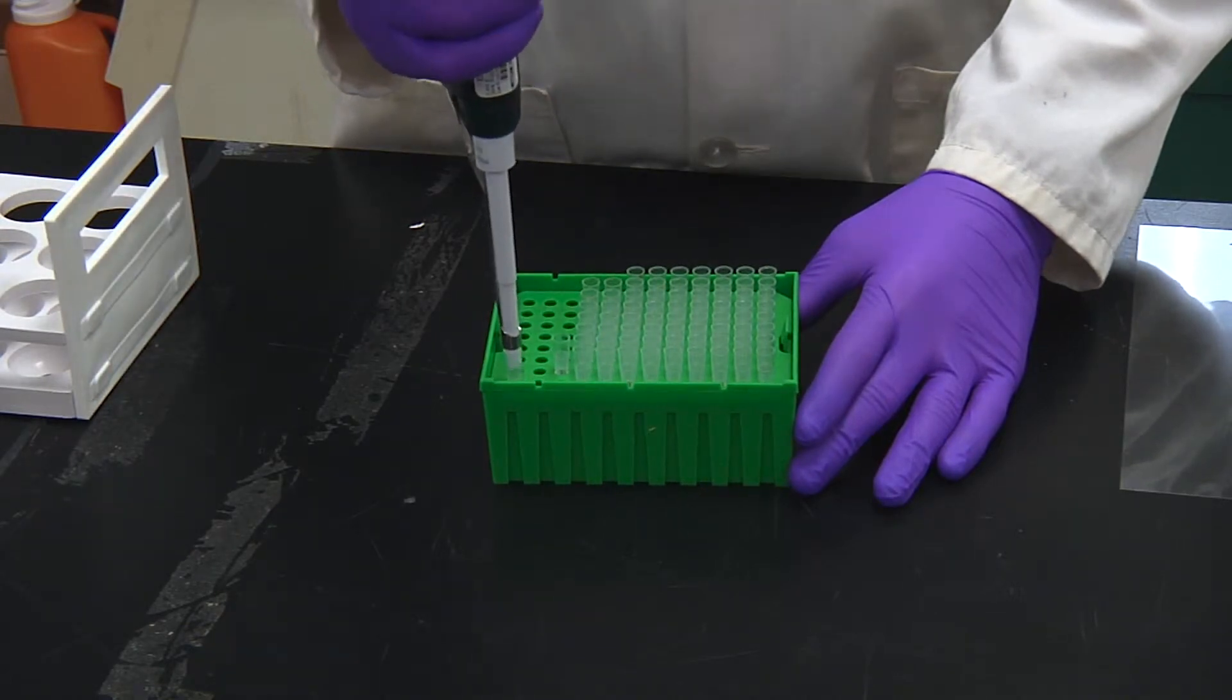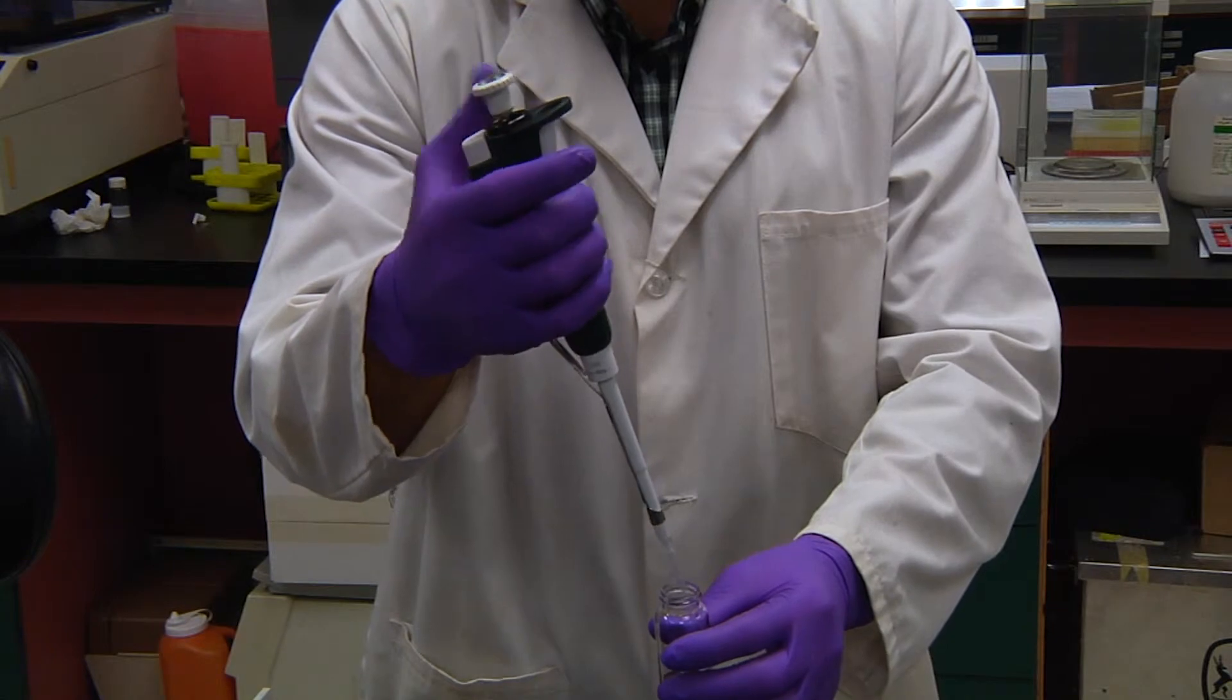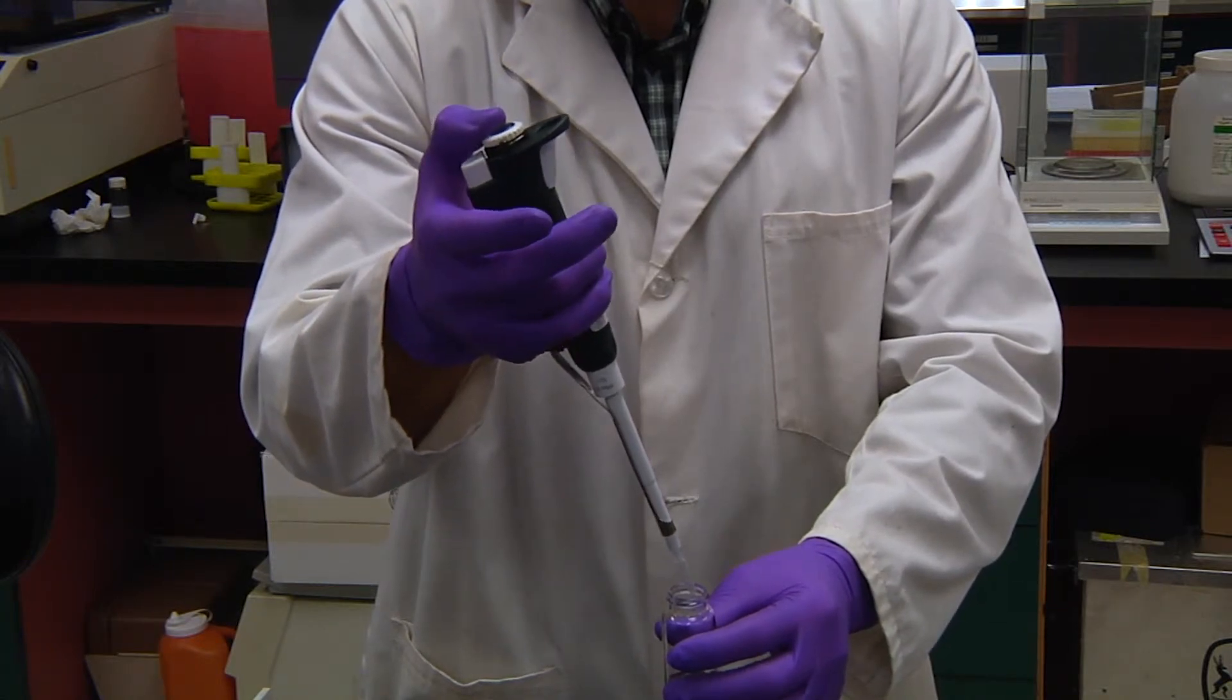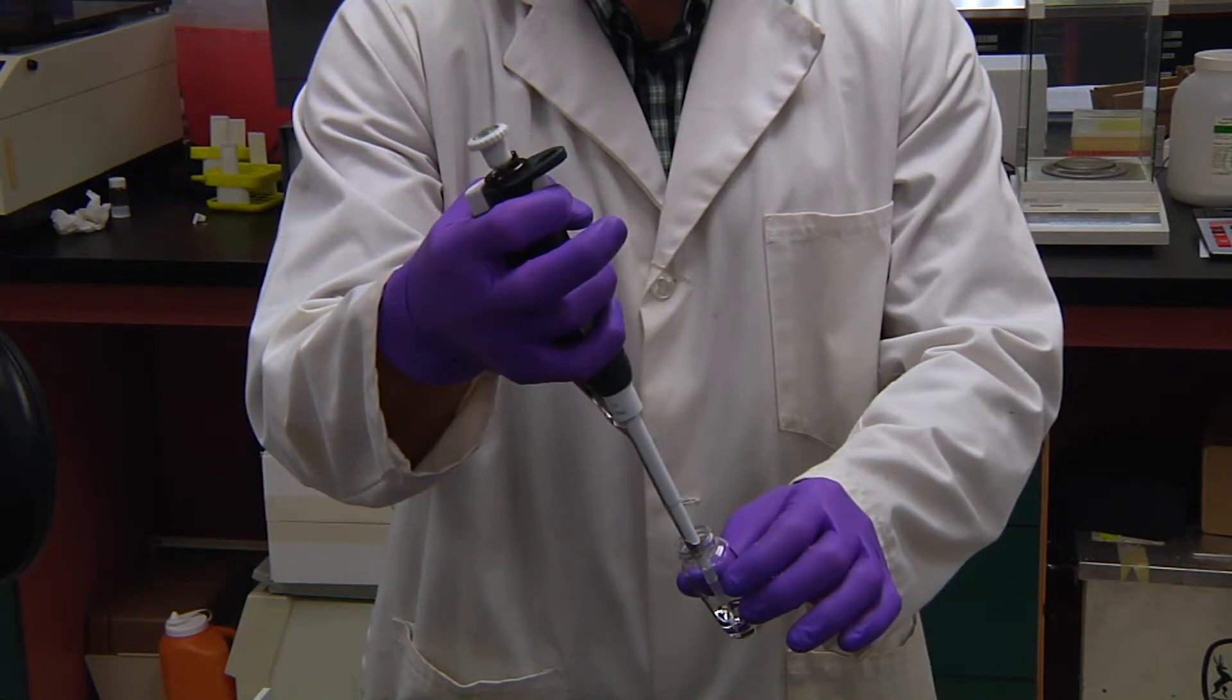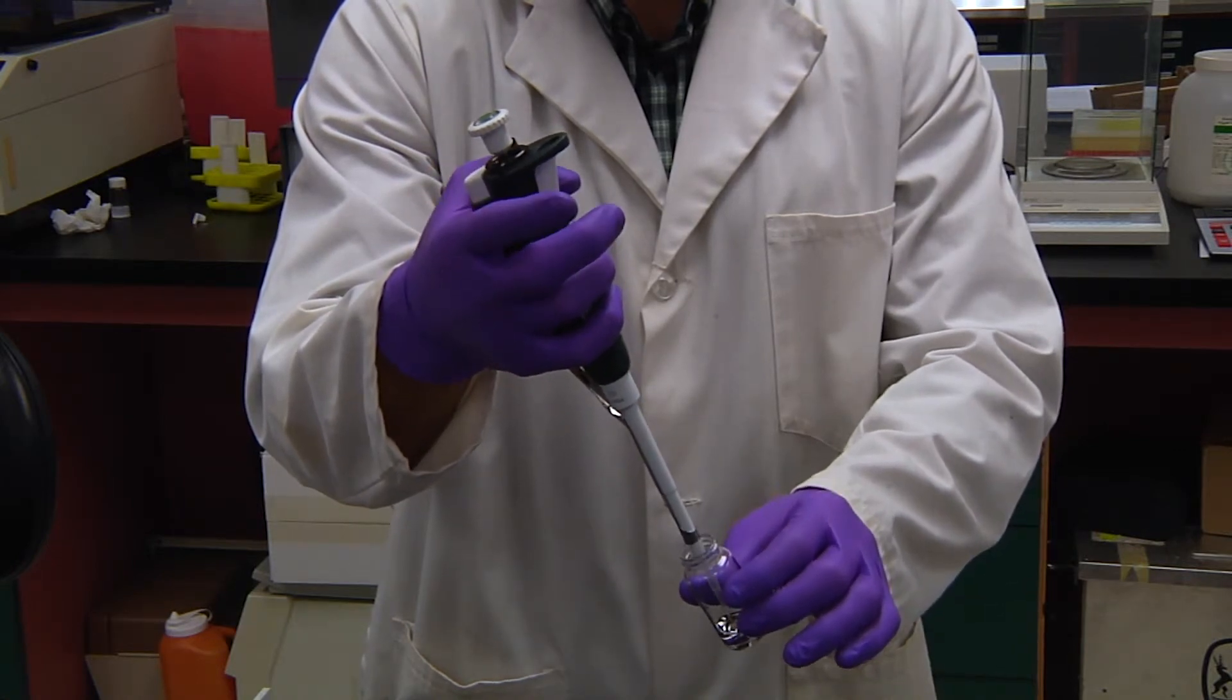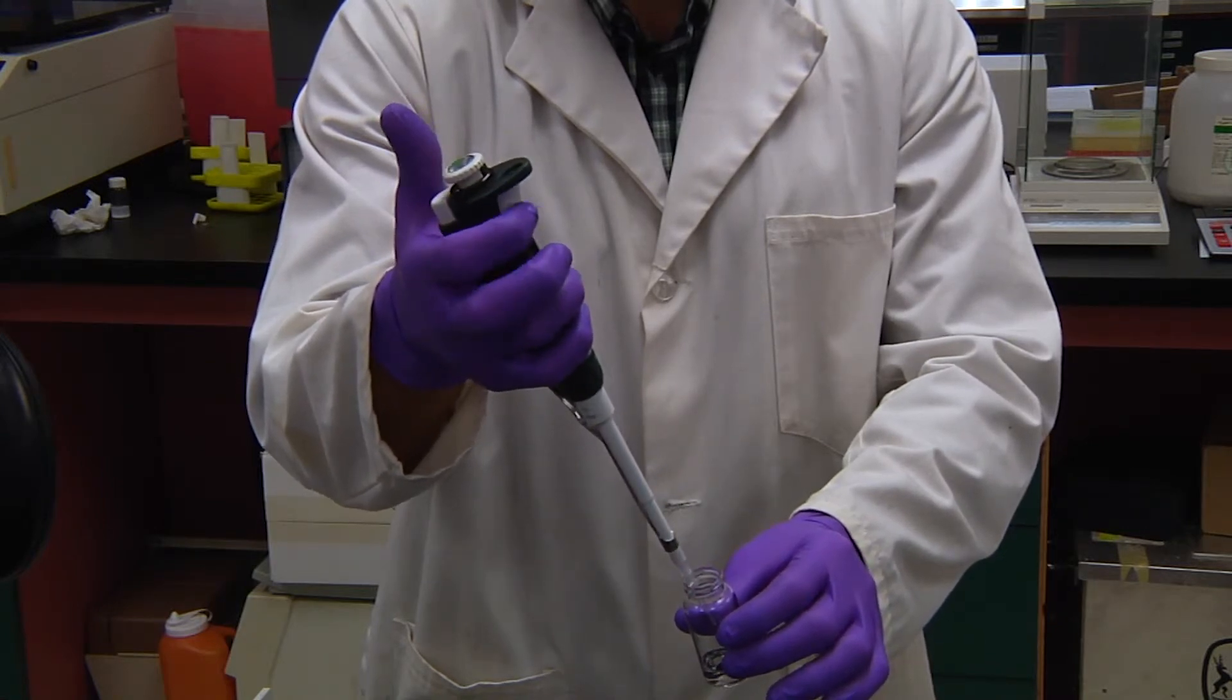When you're ready to use the pipette, load it with the tip, pressing firmly. This pipette uses the trigger to withdraw liquid. Press the plunger to ready the pipette to draw. Immerse the tip in the liquid and press the trigger to withdraw. Dispense by steadily pressing the plunger downwards until it fully stops.